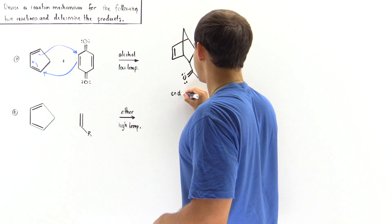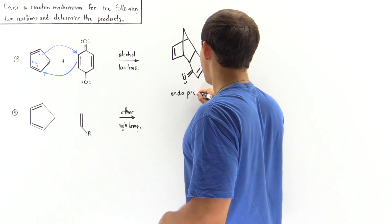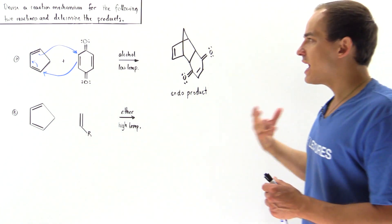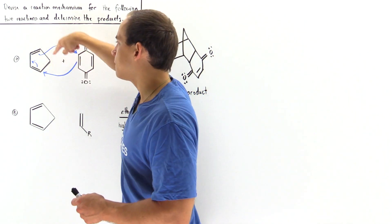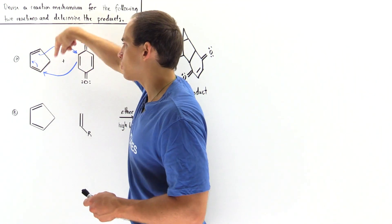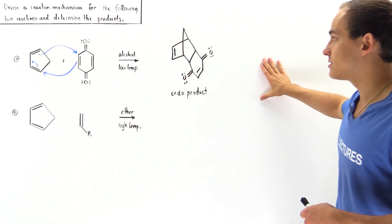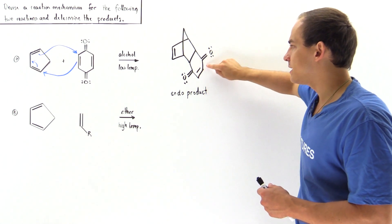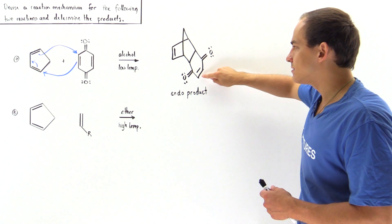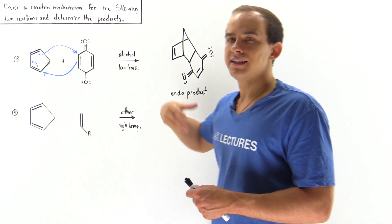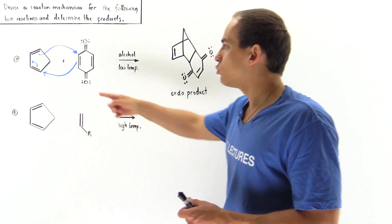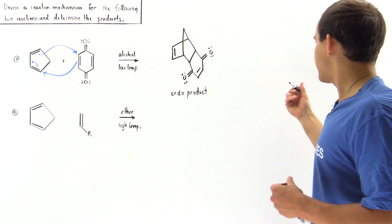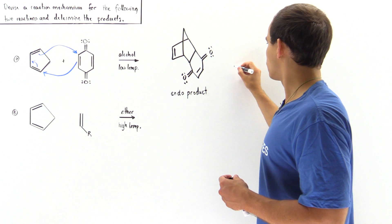Now the question is, is this the final product of our reaction? Well, it depends. If we have another one of these molecules — another one of these 1,3-dienes in the presence of this molecule — notice we have this pi bond here. This pi bond can basically add as a dienophile reacting with this other 1,3-diene, and the way that happens is as shown right here.